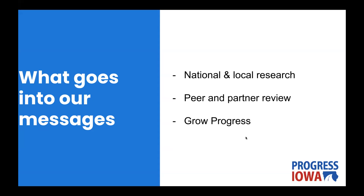We also have folks on this call who are part of our peer review process. We really appreciate all the work people put into editing our messages. We get about a hundred words to put a message together and then test it. Making those really distinct from each other and making sure we're hitting on all the different perspectives that folks are aware of in Iowa is really helpful in getting really good messages. We're putting all of this through our filter of being Iowans and knowing how we talk to each other — making sure that if something is working on a national level, we want to know: does it work at an Iowa level? And if it doesn't, how can we tweak it? We've got Grow Progress to help make sure our messages and success questions are all logical and distinct.